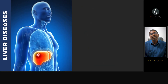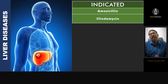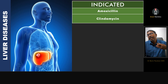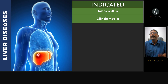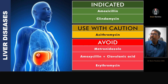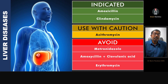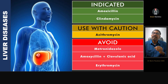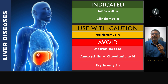First, let's see about liver diseases. Amoxicillin and clindamycin can be used safely in those who are having liver diseases — not end-stage disease. If there is an end-stage disease, it is recommended to consult with a physician. But in initial disease stages, amoxicillin and clindamycin can be used safely. Azithromycin must be used cautiously, and metronidazole, amoxicillin with clavulanic acid, augmentin, and erythromycin must be avoided.